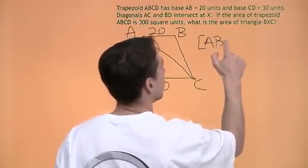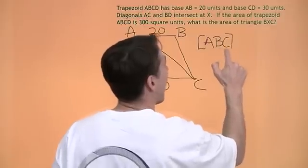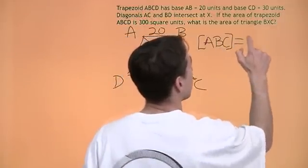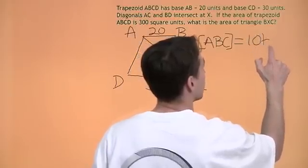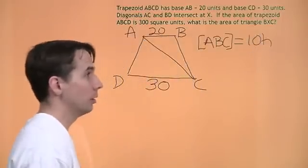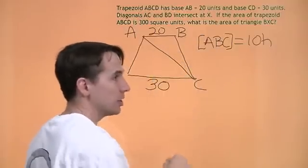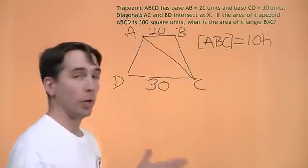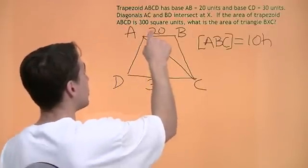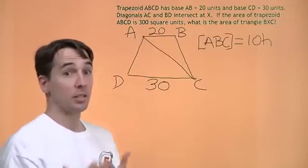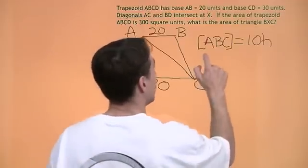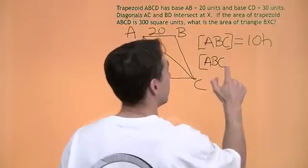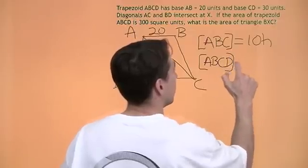So, we can write the area of ABC. The area of ABC is half its base. Base is twenty. So, half of that's ten. Times the height. And we know that the height is just the same as the height of the trapezoid. We're calling that H. The brackets mean area. Brackets, that means area of ABC. So, now, for the trapezoid, we know the area of the trapezoid. The area of the trapezoid is the average of the bases times the height. The average of the bases here is twenty-five. And the height is still just H. So, we can write that down too. The area of ABCD is twenty-five H.